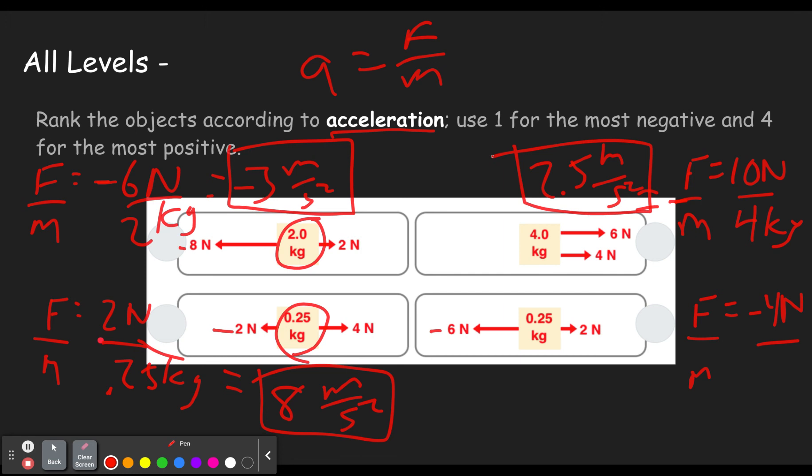Okay. These are the accelerations we're calculating. Remember, because acceleration is force divided by mass. So down here, we have 0.25. So negative four divided by 0.25 is negative 16 meters per second squared.